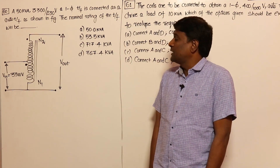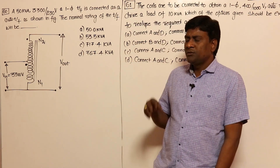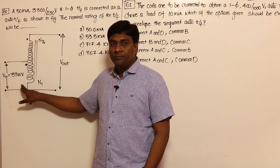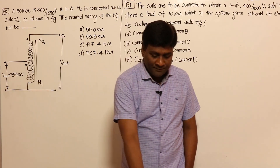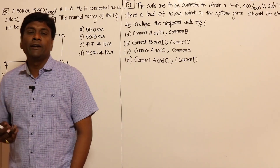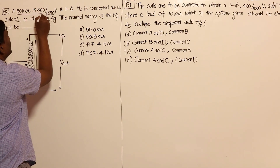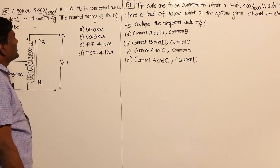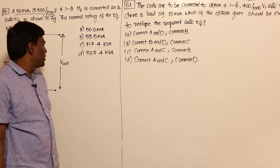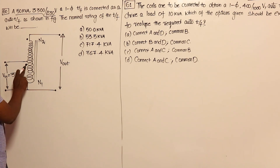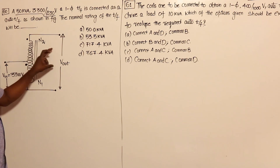Let us think of three problems in auto transformers. In some publications they have given a dot here, but in the original question please cross it. From old gate publications: a 50 kVA, 3300 by 230 volts single-phase transformer is connected as an auto transformer as shown in the given figure. What is the nominal rating? The connection is aiding.